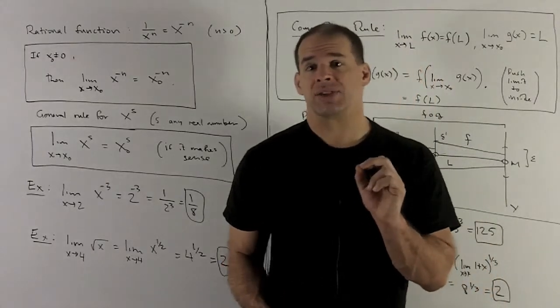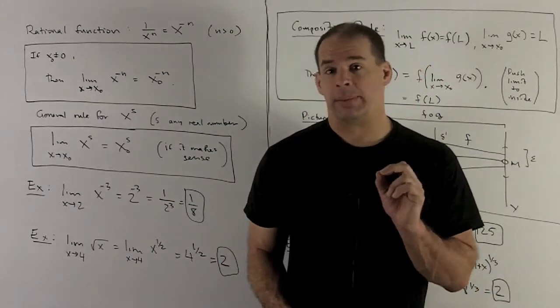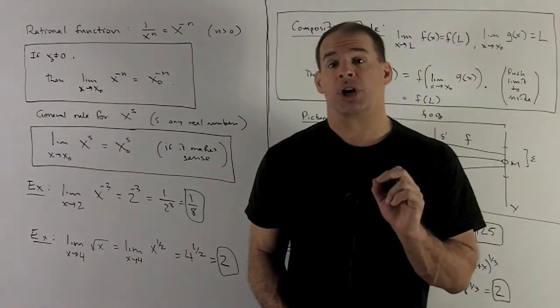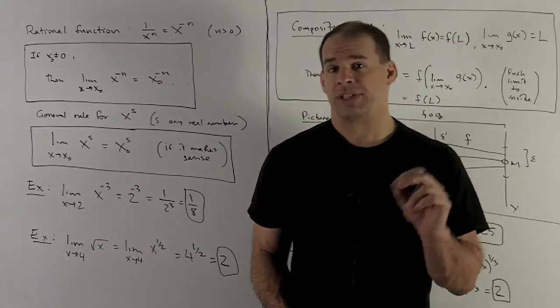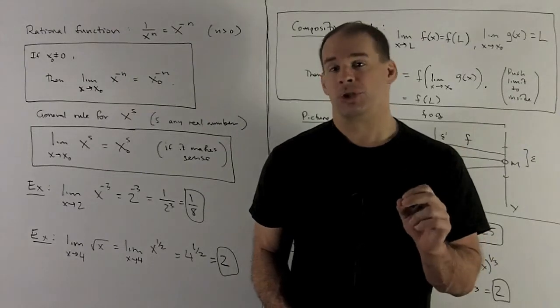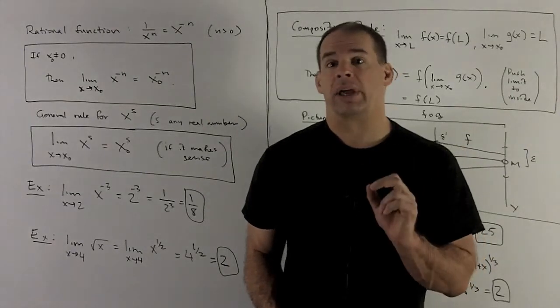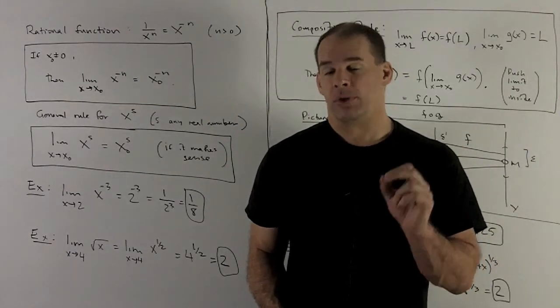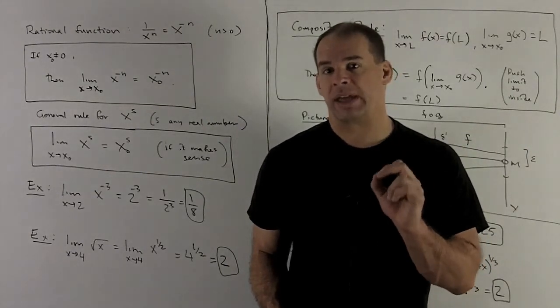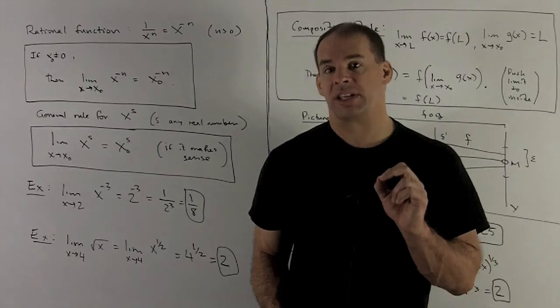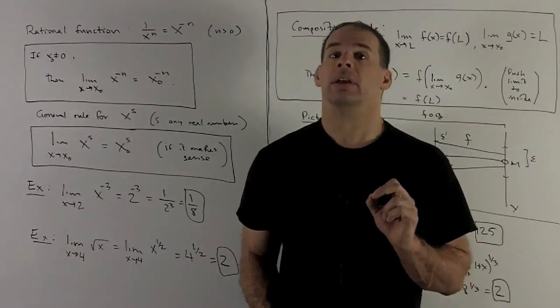So what that says: if I take n to be any integer, x to that power — you take the limit, you're just going to evaluate. If you're using a negative exponent, you just have to be careful that you're not sticking zero in.